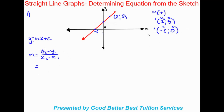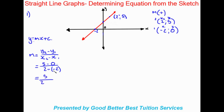Substituting in: y2 is five, minus y1 which is zero, over x2 which is two, minus negative two. It's very important to put that negative number in brackets, because if you don't, you won't get the sign change that takes place, which can completely change your answer. So on top we have five, and on the bottom two minus negative two becomes two plus two, giving us five over four.